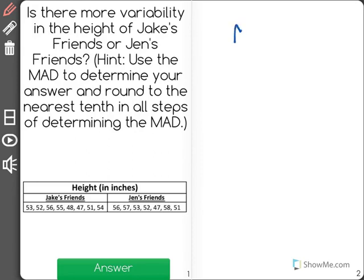MAD stands for Mean Absolute Deviation. And the way that we find that is first we find the mean of each data set.